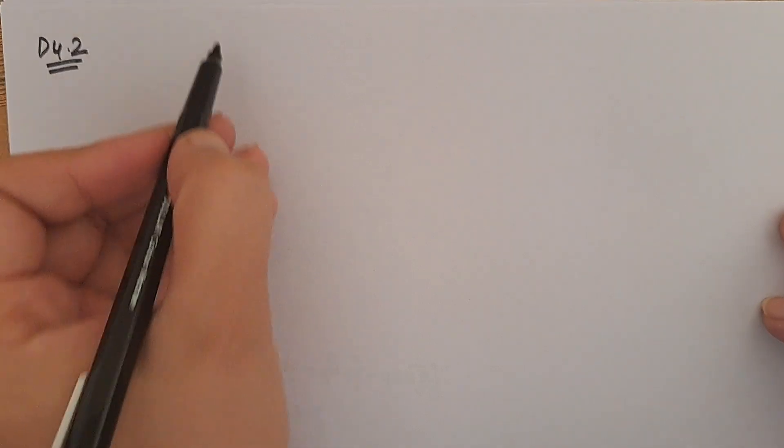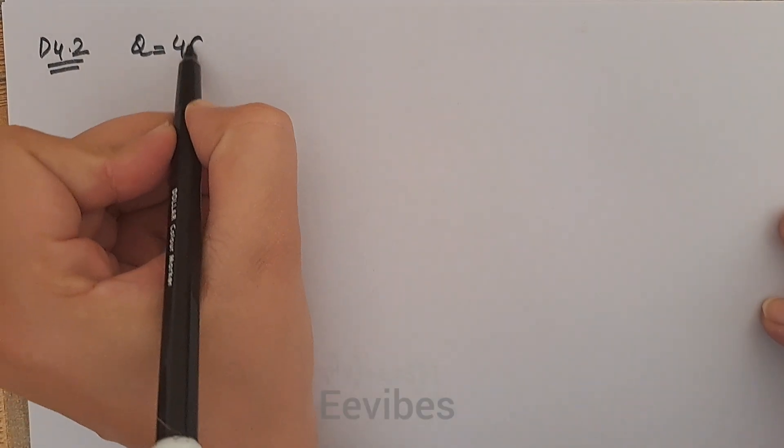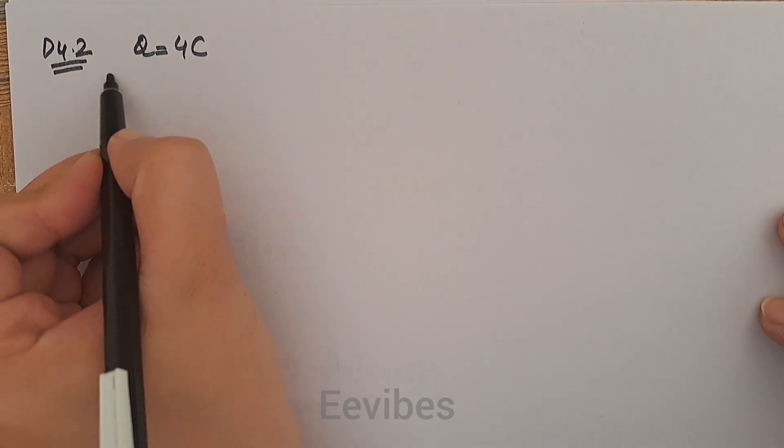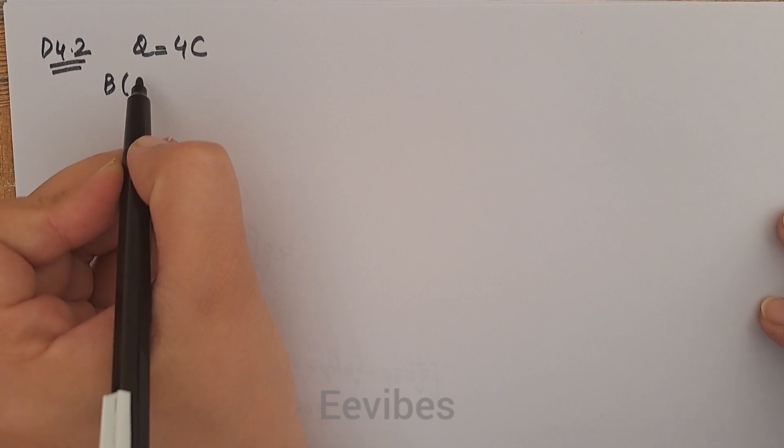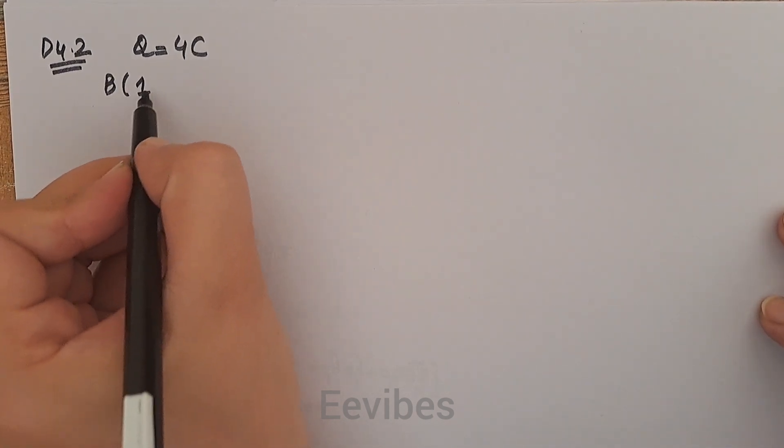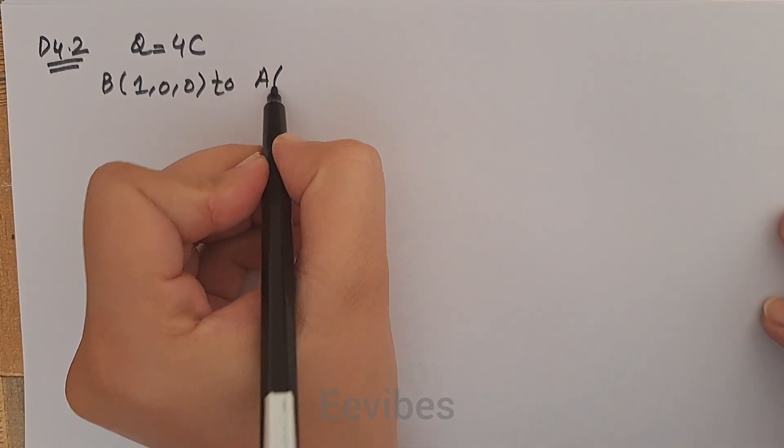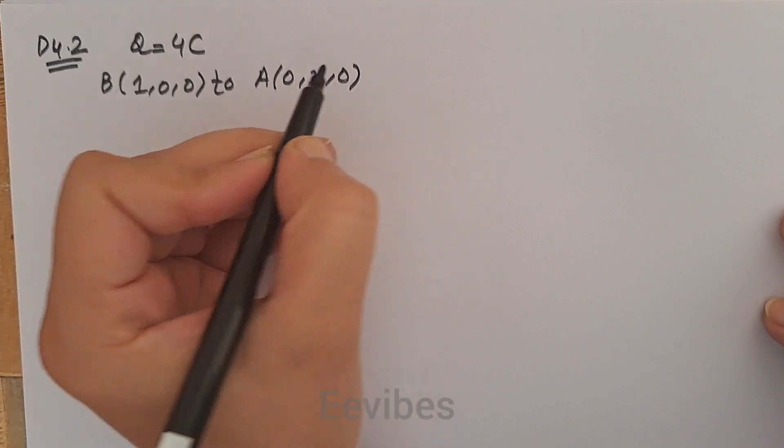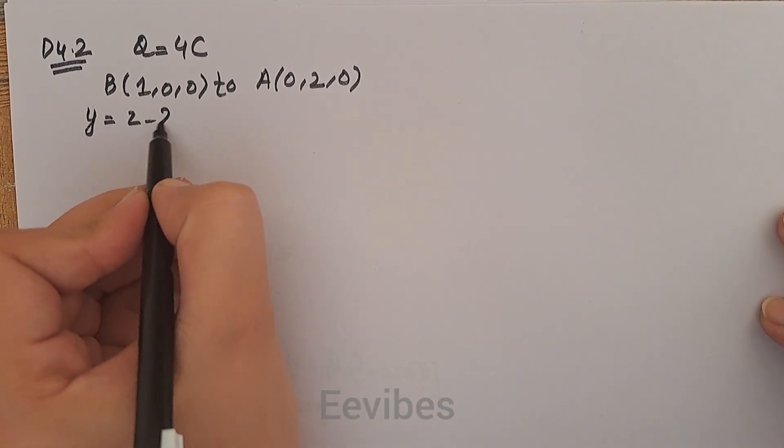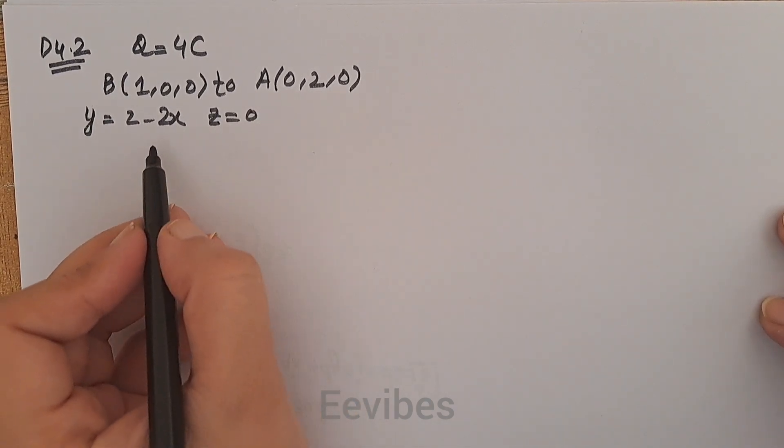in moving a point charge Q given by 4 coulombs. The starting point is B whose coordinates are (1,0,0) to the point A (0,2,0), along the line y = 2 - 2x